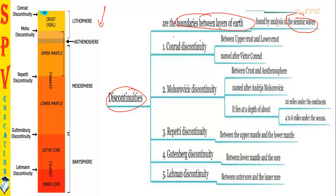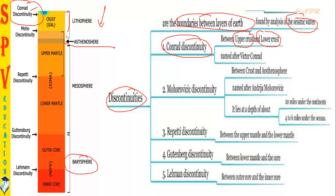First, the Conrad discontinuity. This is between the upper crust and lower crust — the crust is divided into two parts, upper and lower, and between them lies the Conrad discontinuity. Looking at the image: below the lithosphere lies the asthenosphere, then the mesosphere — wherever the mantle is present (upper mantle and lower mantle) it is called the mesosphere. The inner core and outer core combined is called the barysphere. The Conrad discontinuity was first named by Victor Conrad.